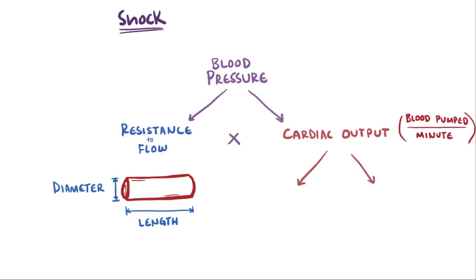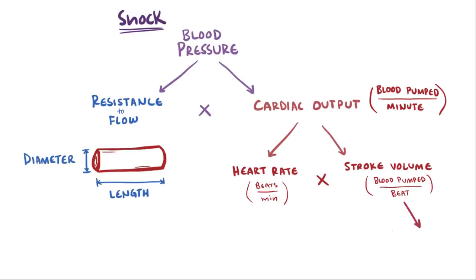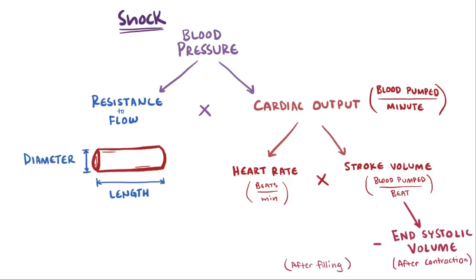Cardiac output can be broken down into heart rate — the number of beats per minute — times stroke volume, the amount pumped out each beat. Going even further, stroke volume is found by taking the total volume of blood left over after contraction, the end systolic volume, and subtracting it from the total volume in the heart after filling, the end diastolic volume.